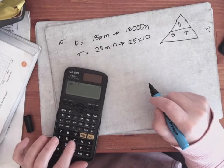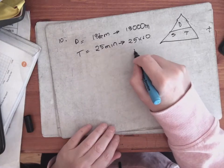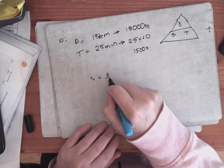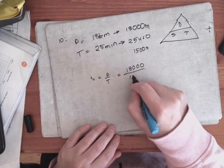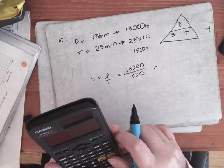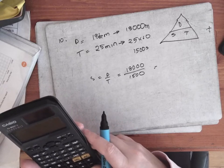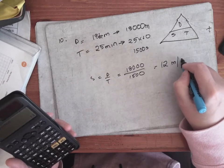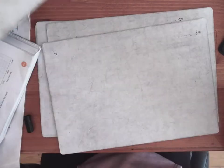Speed equals distance over time: 18,000 meters divided by 1500 seconds. Into the calculator: 18000 divided by 1500 gives 12. So the answer is 12 meters per second. That's number ten.